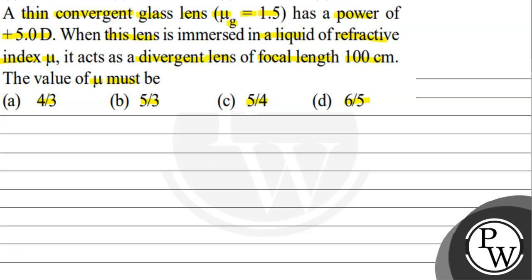First, let's talk about the key concept used in this question. We will apply the lens maker's formula. According to the lens maker's formula, the relation is: 1/f = (n2/n1 - 1)(1/R1 - 1/R2).